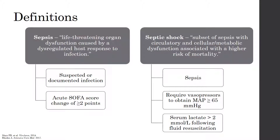Here are the definitions of sepsis and septic shock directly from the 2016 Surviving Sepsis Campaign Guidelines. The guidelines define sepsis as a life-threatening organ dysfunction caused by a dysregulated host response to infection. When diagnosing a patient with sepsis, the patient must have a suspected or documented infection, as well as an acute SOFA score change of greater than or equal to 2 points. SOFA stands for Sequential Organ Failure Assessment, and we'll talk more about the score in upcoming slides.